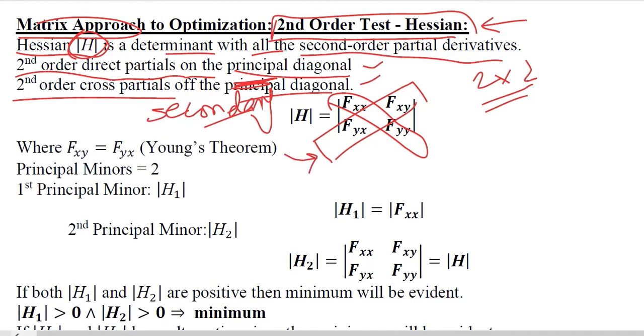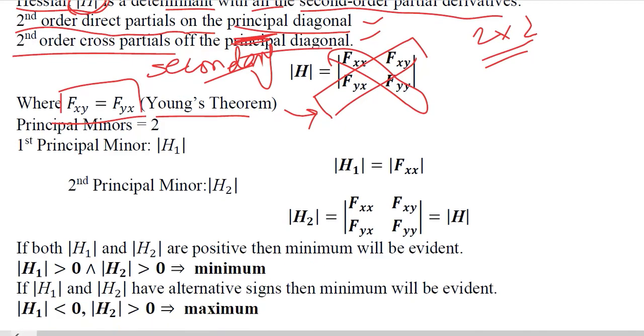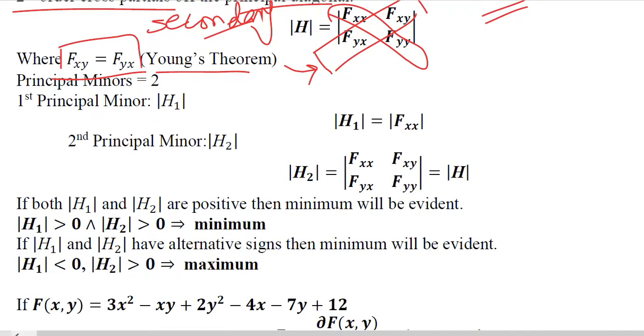From the point of view of the secondary diagonal, these two values - F_xy and F_yx - are equal under the umbrella of Young's theorem. This is the observation that we have.